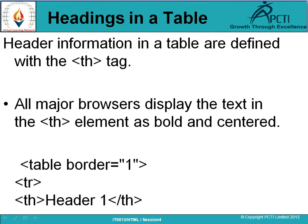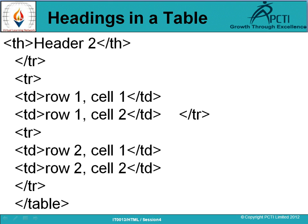Headings in a table: Header information in a table are defined with the TH tag। Table में heading देने के लिए TH tag का use करते हैं। All major browsers display the text in the TH element as bold and centered। TH से जो भी provide करते हैं वो bold होते हैं और center में visible होते हैं। Example: table border 1, TR, TH header 1, TH header 2, closing of TH, closing of TR, second row, third row with columns, closing of TR and closing of table।